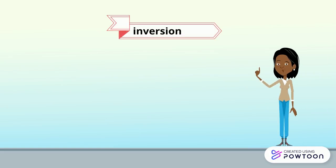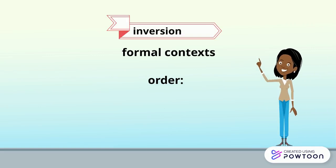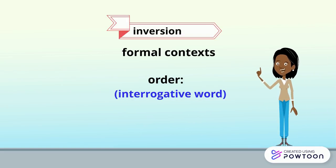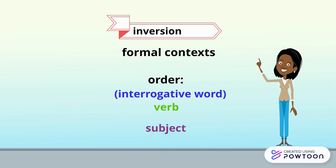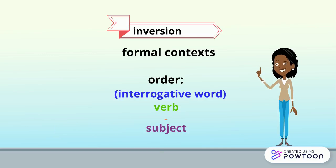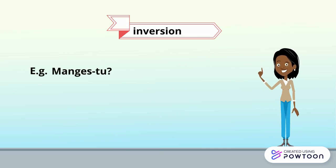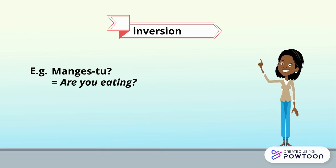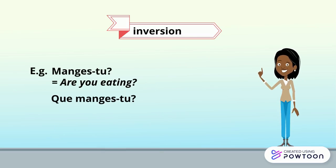Secondly, the inversion is used in a relatively formal context. The order is: interrogative word (if any), plus verb, plus subject, with a hyphen between the verb and the subject. For example: "Manges-tu?" — are you eating? "Que manges-tu?" — what are you eating?